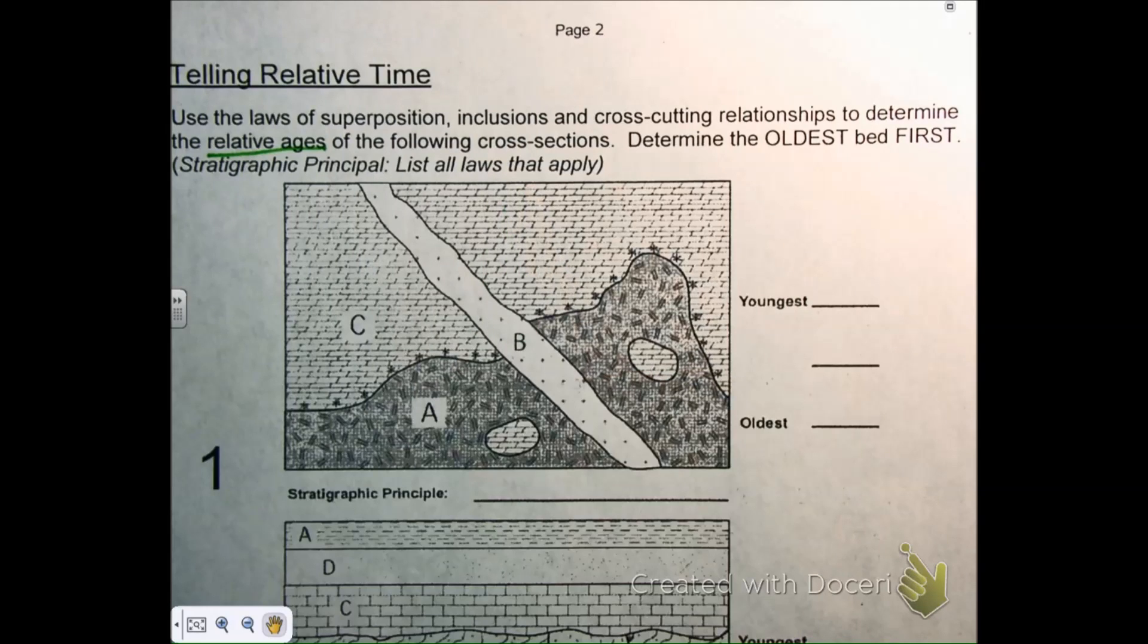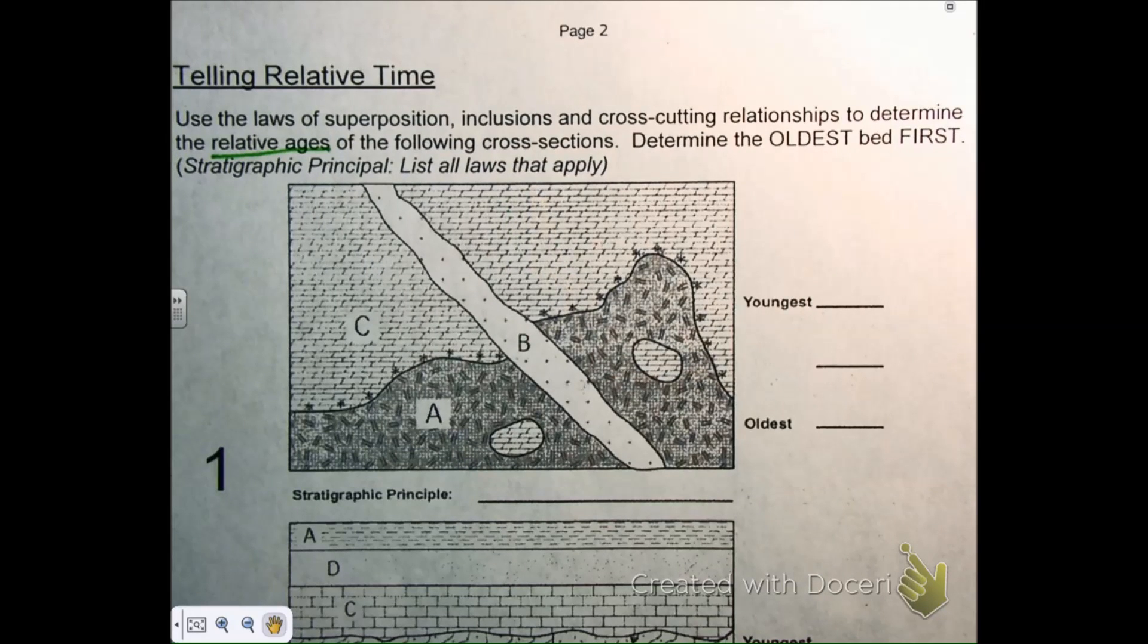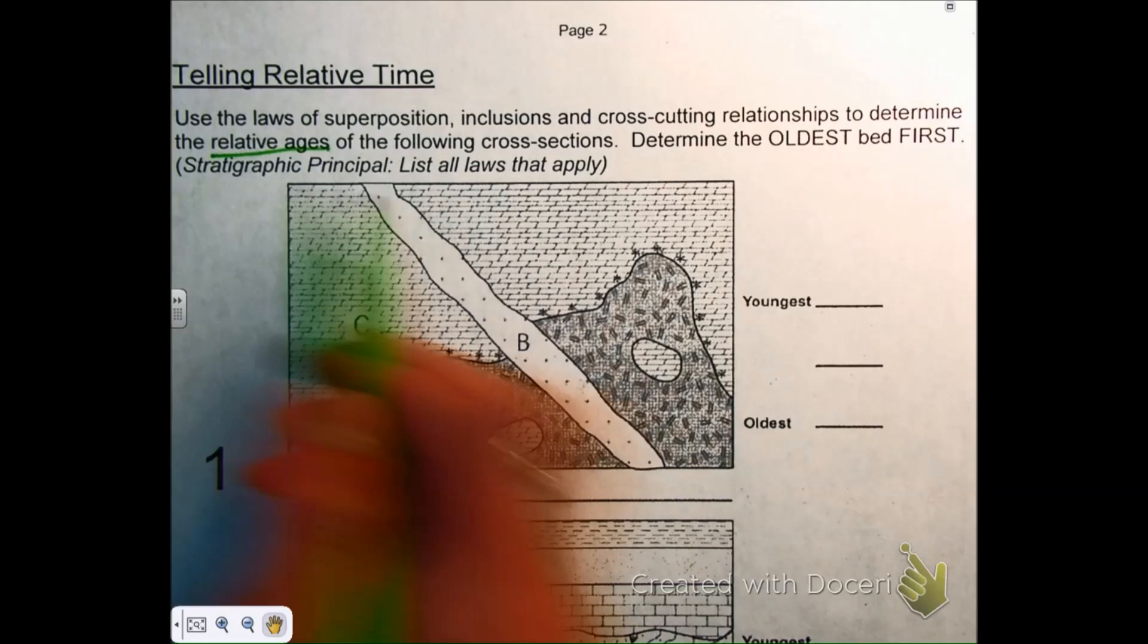It wants you to determine the oldest layer first. That's how you need to work every time, working oldest to youngest. You'll mess yourself up if you try doing it the other way around. The stratigraphic principle is just another way of saying which law applies or which laws. Sometimes multiple laws will apply in your decision-making.